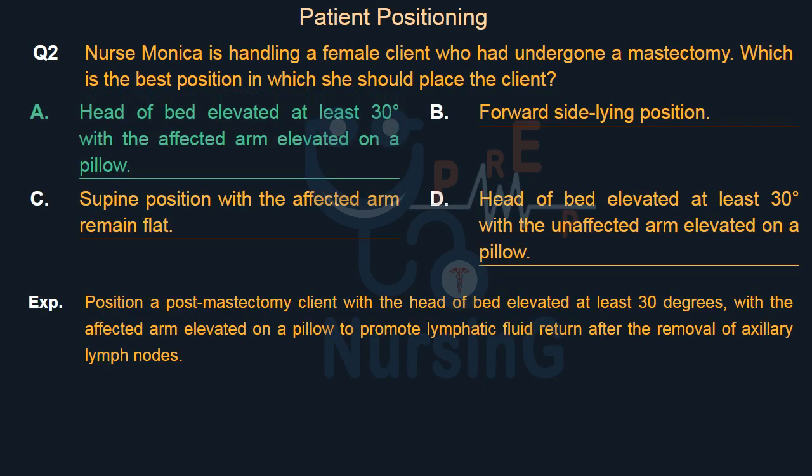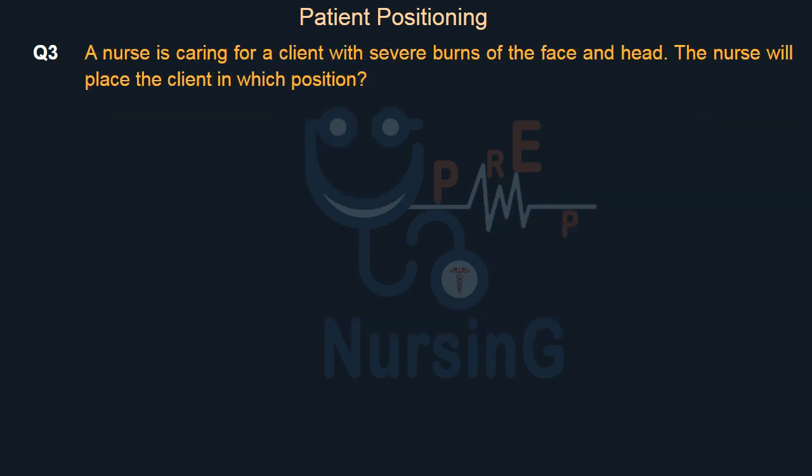The right answer is Option A. Position a post-mastectomy client with the head of bed elevated at least 30 degrees with the affected arm elevated on a pillow to promote lymphatic fluid return after the removal of axillary lymph nodes.